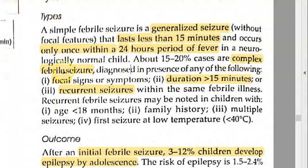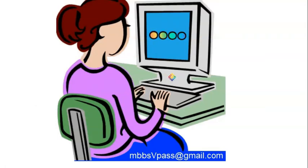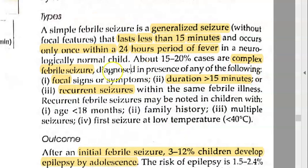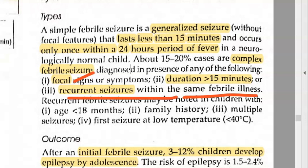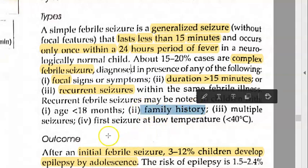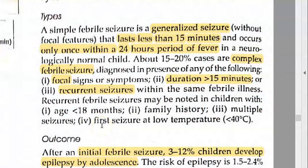Now let us go to complex febrile seizure. Complex is the opposite of simple. It will be a focal seizure. Duration is greater than 15 minutes. Or it is a recurrent seizure within the same febrile illness, within the same fever. This becomes complex. Again, family history might be there in these people. You should always ask the mother and father if they had such episodes or if the siblings have this kind of issue.